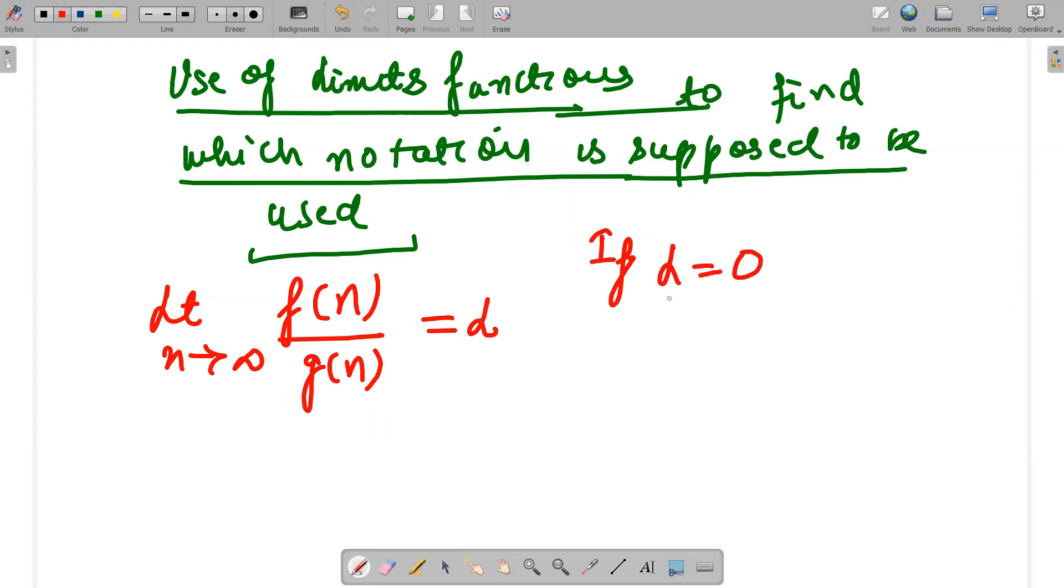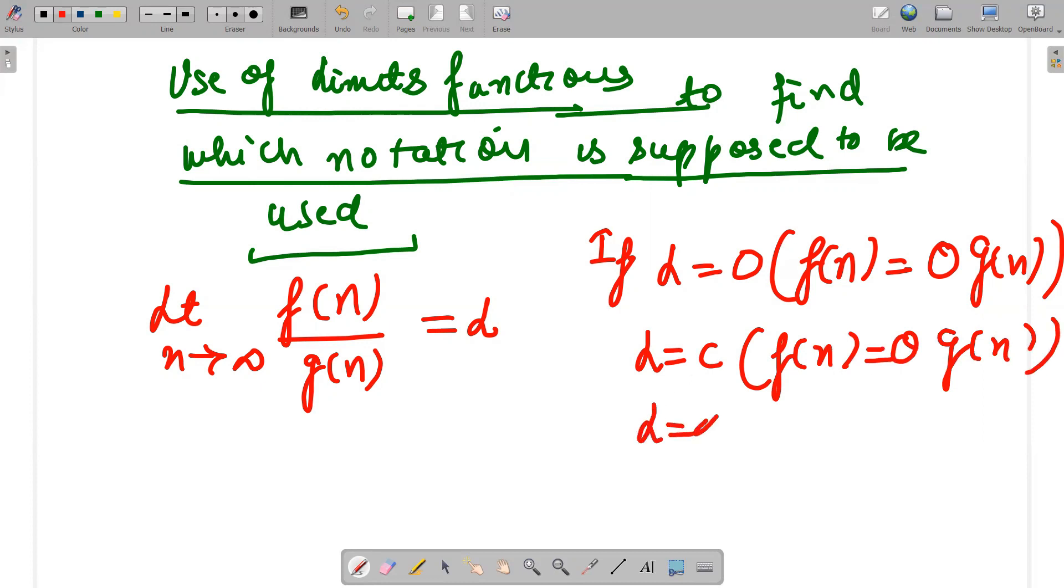if L value is 0, we can clearly write it as f(n) is order of g(n). This is when L value is 0. If L value is any constant, I can say that f(n) is theta of g(n). And if L value is infinite, by default I can always say that f(n)